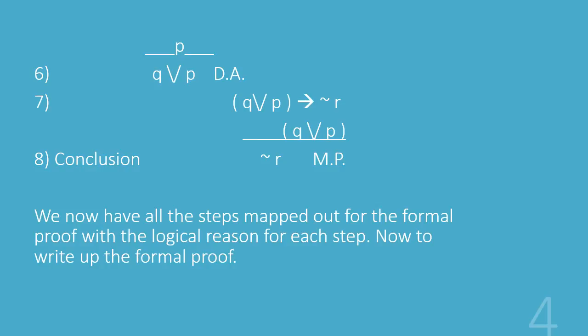We now have all the steps mapped out for us for a formal proof and the logical reason for each step. Notice I have listed these numbers all one through eight and they're going to actually be each step of the formal proof.